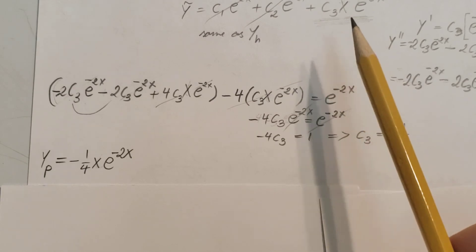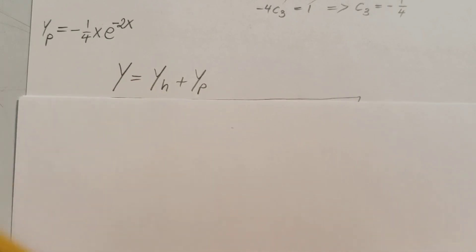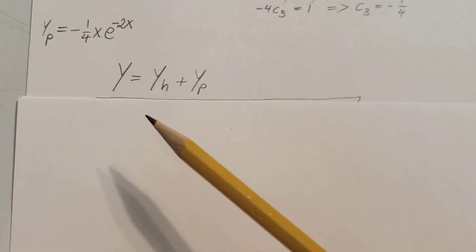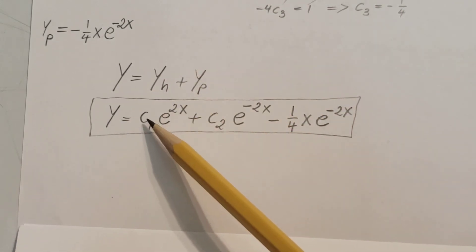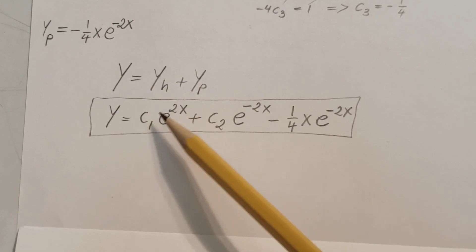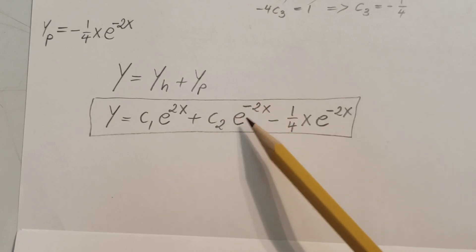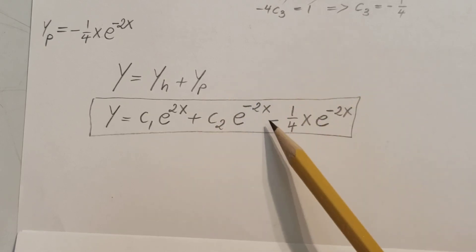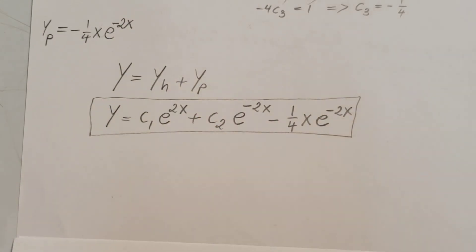Now all that's left is to find our final solution: y equals yh plus yp. We go ahead and plug them in — make sure you don't forget your constants. So y equals c1 e to the 2x, plus c2 e to the negative 2x, minus 1 fourth x e to the negative 2x. That last term is our yp from right there, and that will be it.